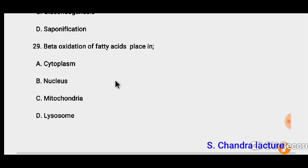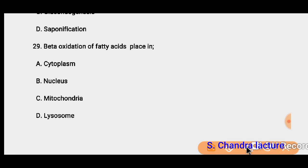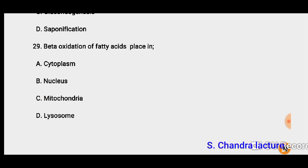Question 29: Beta oxidation of fatty acids takes place in — so beta oxidation produces much energy and takes place in mitochondria.